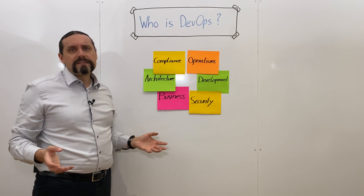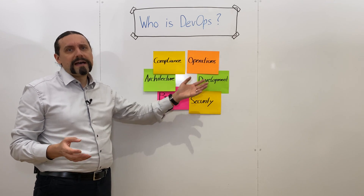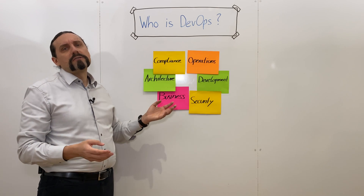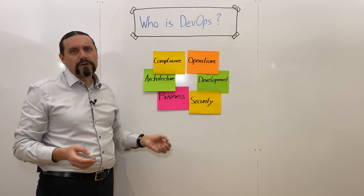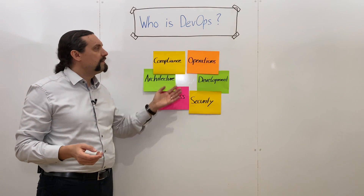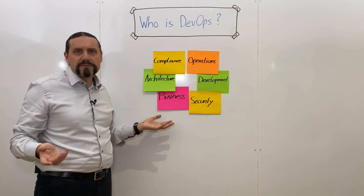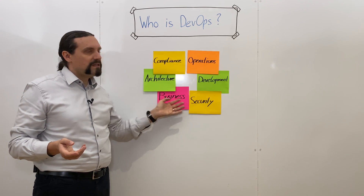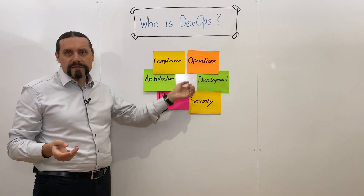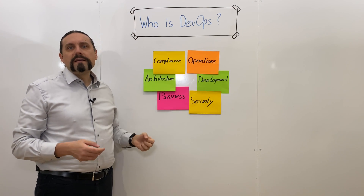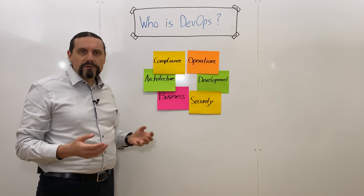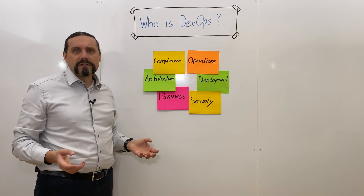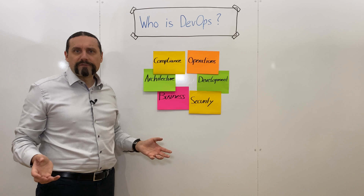So I usually say we have DevXOps, or DevStarOps, or just call it DevOps — which is bringing all the people, the technology, and the process together to continuously deliver value to the customer. This is DevOps.